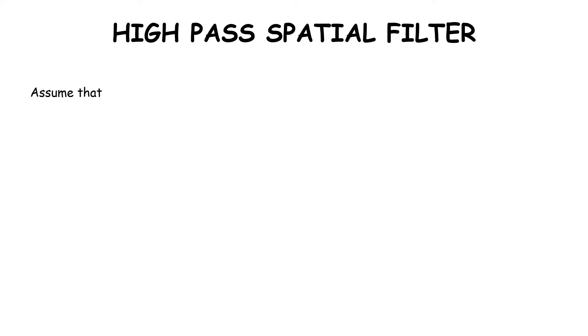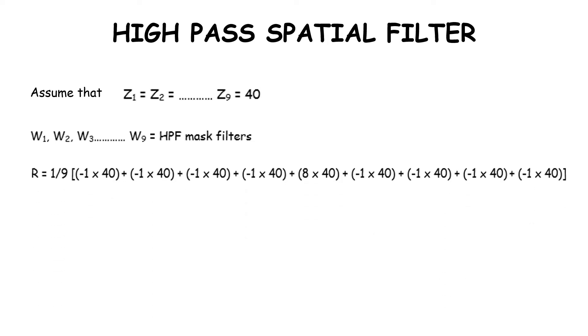Assume that z1 through z9 all have values of 40, and w1 through w9 are the high pass filter mask values. Then r = (1/9)[(-1)(40) + (-1)(40) + ... + (8)(40) + ... + (-1)(40)]. Here, 8 is the center value and -1 is for all surrounding pixels, so r = 0.